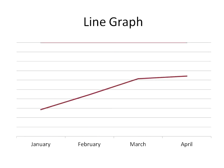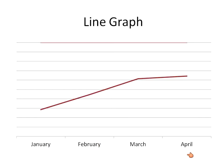A line graph is usually used to show change over time. Here's an example — January, February, March, April. Maybe the number of birds you see in your yard or something like that. You'll have a number on the left — one, two, three, four, five — and then a line graph will go up and down, usually over a measurement of time along the bottom.